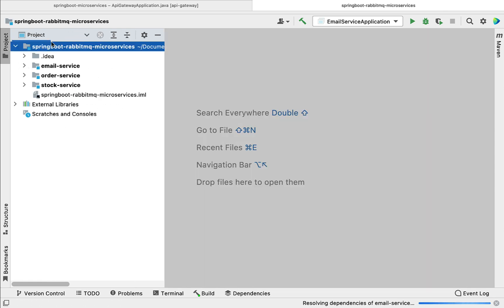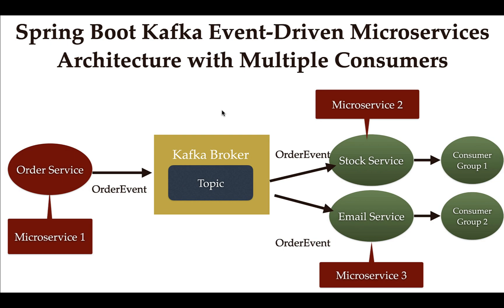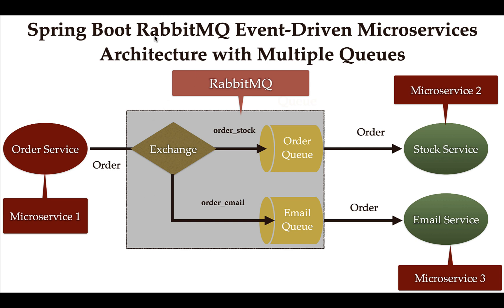The third project is Spring Boot RabbitMQ Microservices. In this project, we will create multiple microservices and see how to use RabbitMQ as a message broker for asynchronous communication. We will implement a Spring Boot RabbitMQ event-driven microservices architecture with multiple queues, creating services like order service, stock service, and email service.